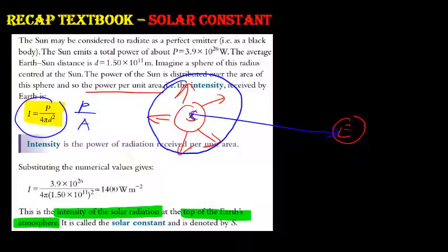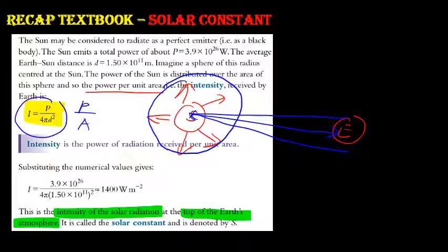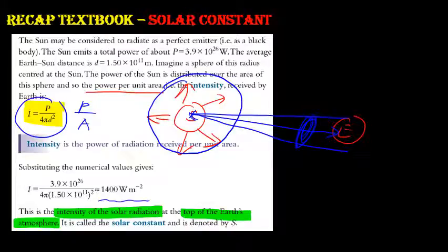So d is the Sun-Earth distance, not the surface area of the Earth or the Sun. Substituting numerical values gives approximately 1400 W/m². Be careful — this value is at the top of Earth's atmosphere and does not yet account for atmospheric effects like cloud cover.